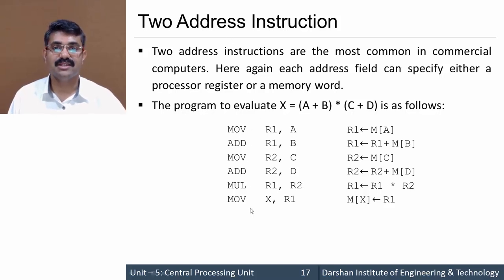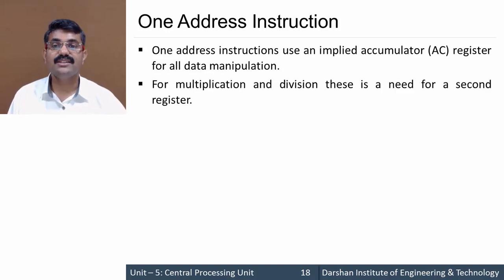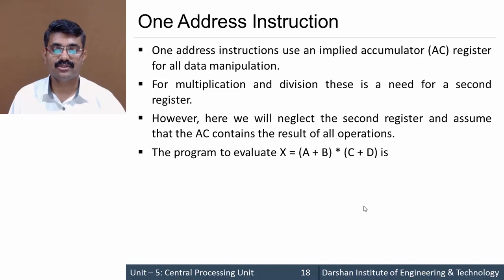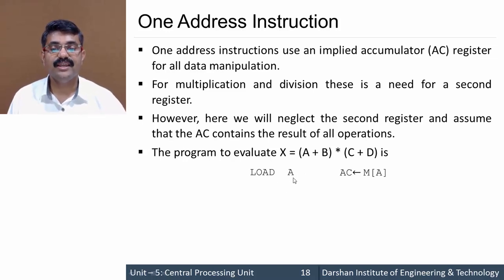One address instruction implies an accumulator register — if we want to implement one address instruction we require an accumulator register for all types of data manipulations. For multiplication and division there is a need of a second register. For the same expression (a + b) × (c + d), only one operand is specified per instruction. First, LOAD a transfers the content of memory a into the accumulator. Then ADD b gives AC ← AC + M[b], so the accumulator now contains a + b.